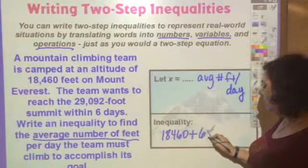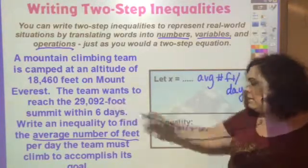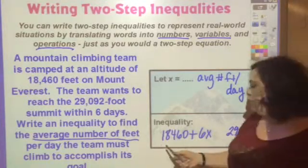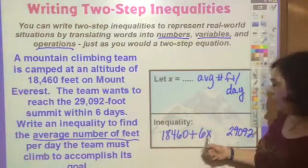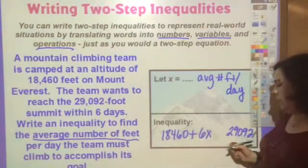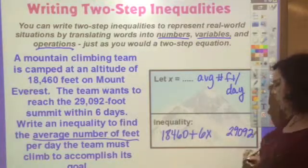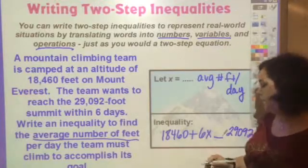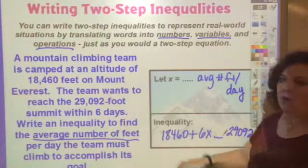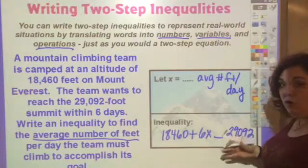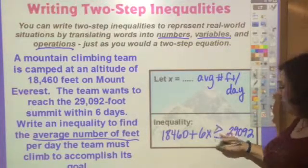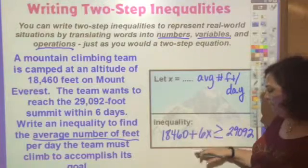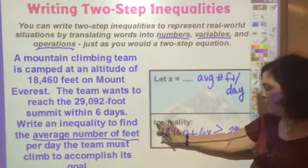Does this have to be greater than 29,029 or less than 29,029? It has to be at least equal to it. If it were less than, we wouldn't reach the goal. So it needs to be greater than or equal to that amount — 18,460 plus 6x must be greater than or equal to 29,029.